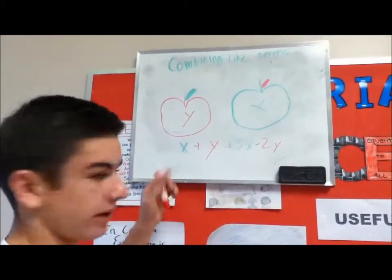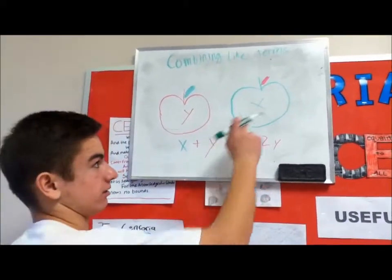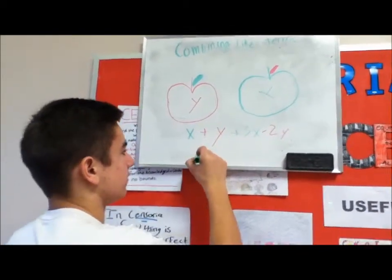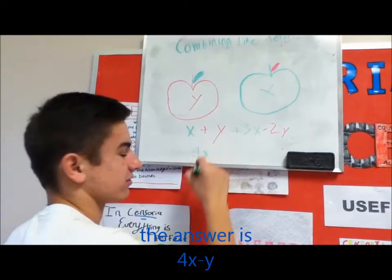So I just say how many apples are in here. There's one. How many here? There's three. So that's 4x, so that's four green apples.